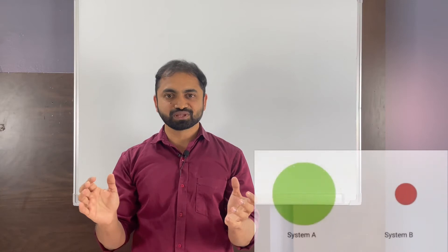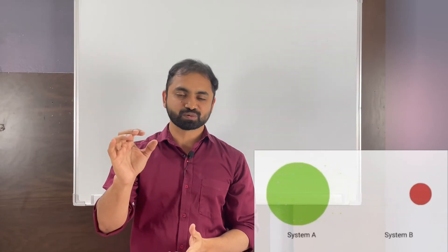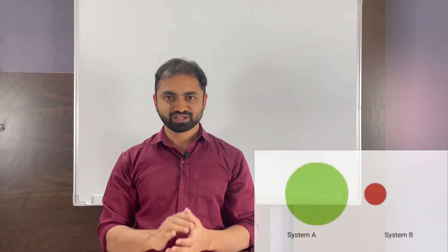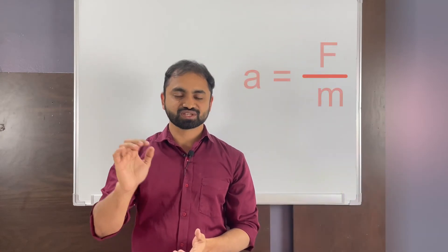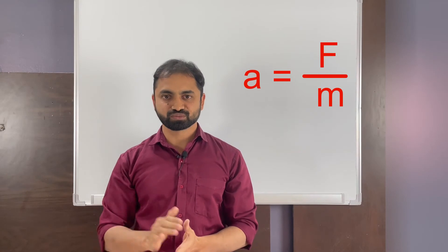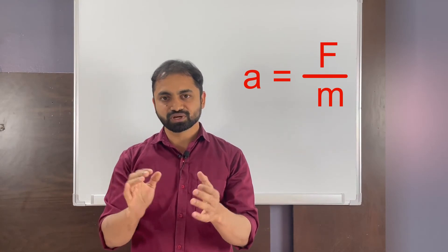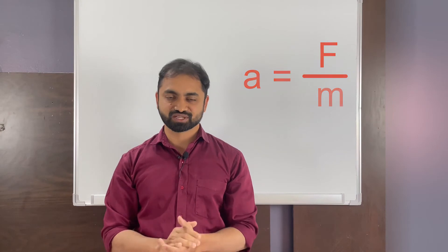According to Newton's third law, when two objects collide, they apply equal forces on each other in the opposite directions. The acceleration of an object is inversely proportional to its mass. By Newton's second law, acceleration is equal to net force divided by the mass of the object. So the object with greater mass will have less acceleration.